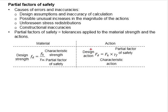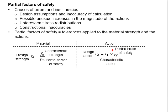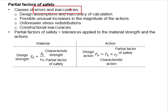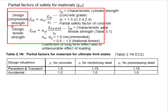The other type of partial factor of safety is for the actions. It is multiplied with the characteristic actions to amplify the effects of the load acting on the structure. With that, the structural element is designed against the more conservative value, which accounts for error and inaccuracy so that the structure does not fail.